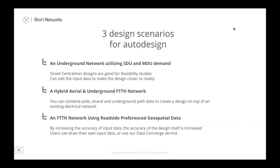There are two main ways to increase the accuracy of input data. First, users can draw in their own input data — if there are easements available, users can draw those in. Second, by using a data concierge service where designers can request that our team create their input data to follow one side of the road.